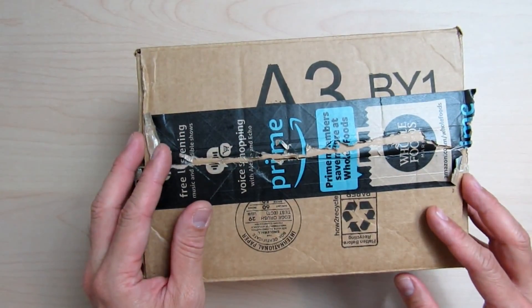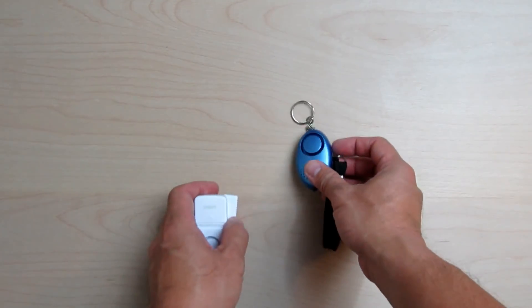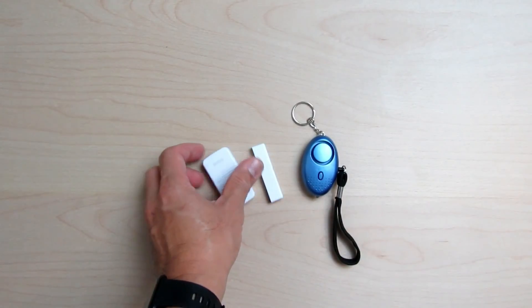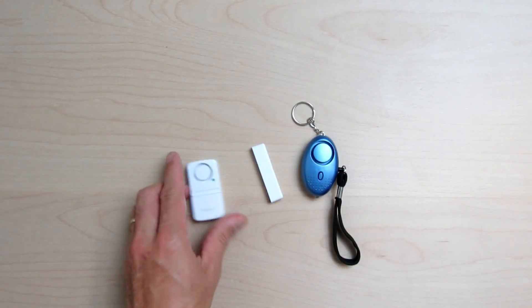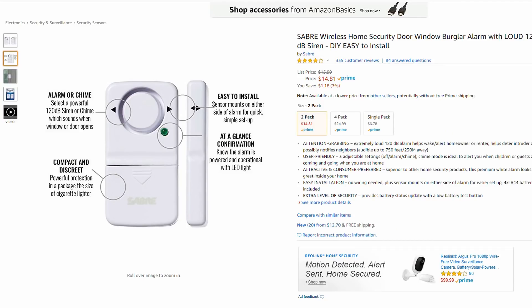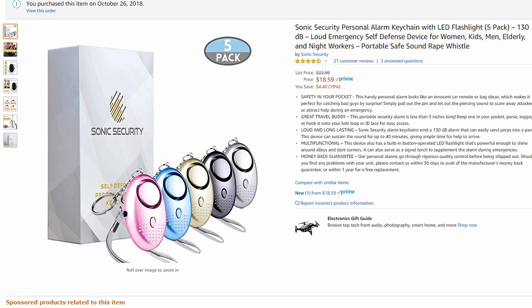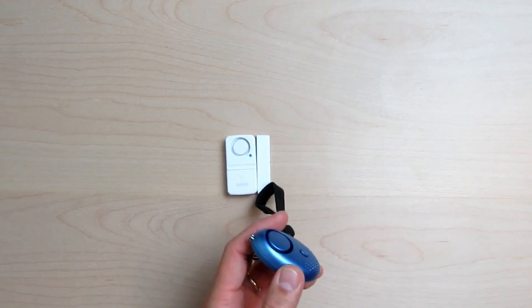Then we have the siren. I have two types for this video and both of them are pretty cheap. Just choose one and I'll show you how to set it up for both types of alarms. I'll include the links for these alarms in the description down below.